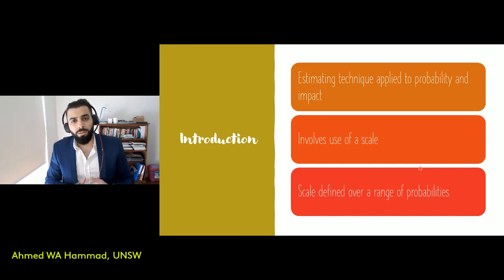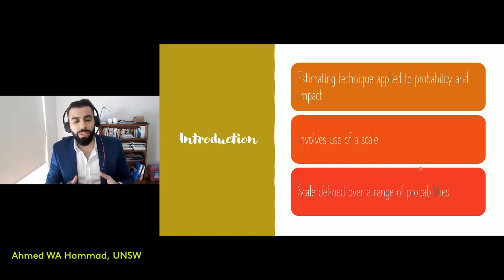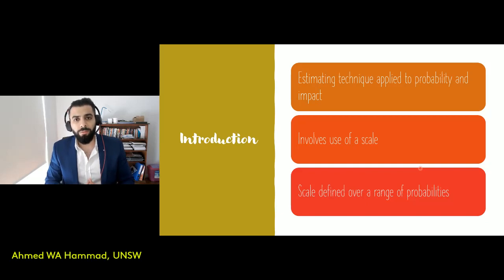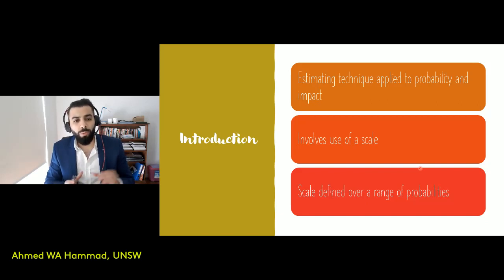Project objectives can be things like cost or duration of the project. When it comes to probabilities, the beauty of this method is that you don't have to specify an exact value. Your probabilities can fall within a scale, and if you assess the situation as falling within that scale, you'd utilize that range as your defining probability — so it's more of a range than a specific value.